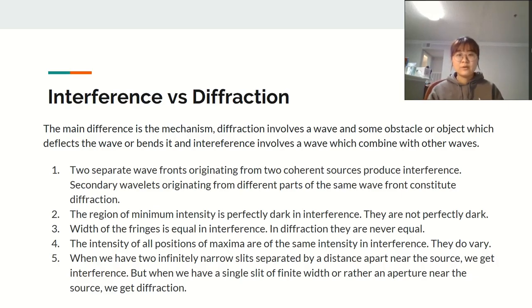So now I will talk about the five differences between interference and diffraction. First, two separate wave fronts originating from two coherent sources produce interference. Secondary wavelets originating from different parts of the same wave front constitute diffraction.